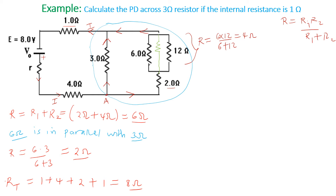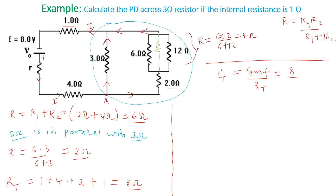Remember, that total resistance is not what we're looking for — we want the PD across the 3-ohm resistor. We first find the total current: I total equals EMF divided by the total resistance, which is 8 divided by 8, giving 1 ampere flowing through the circuit.